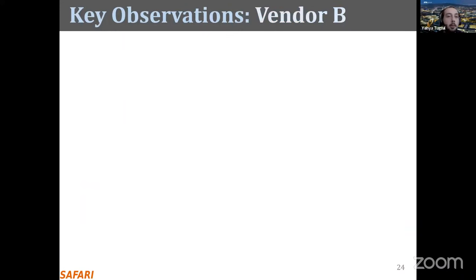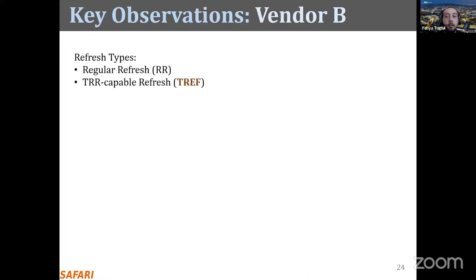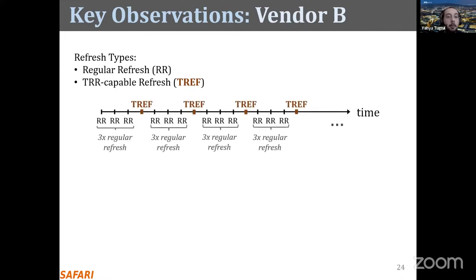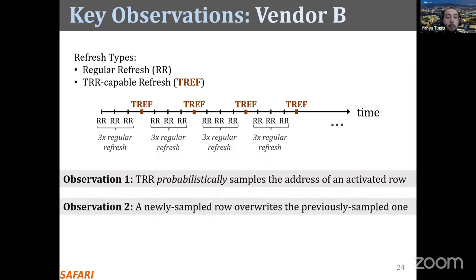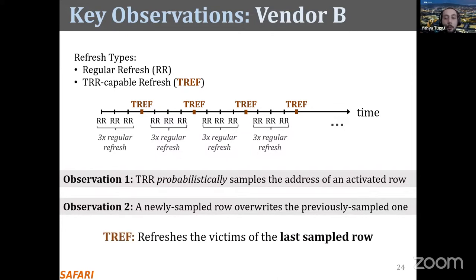Now let's look at Vendor B's TRR implementation. Unlike Vendor A, Vendor B has only one type of TRR-capable refresh, and we observe that it occurs on every fourth refresh command. We make two key observations about how Vendor B's TRR mechanism operates: first, TRR probabilistically samples the address of an activated row as a potential aggressor; and second, a newly sampled row overrides the previously sampled row even if that previous row hadn't received a TRR-capable refresh. Essentially, a TRR-capable refresh command targets the row address that was last sampled by the TRR mechanism.